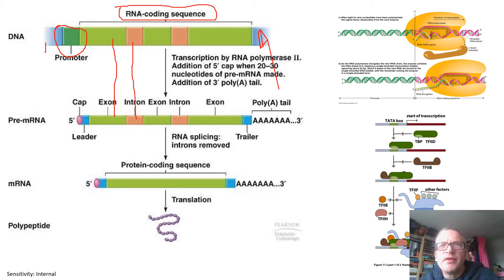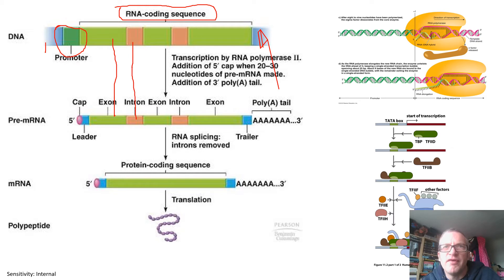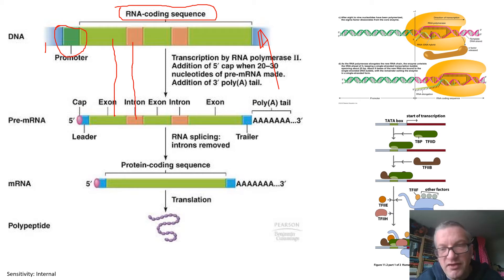In eukaryotes, there is the core promoter at minus 30 — the TATA box (T-A-T-A) at minus 30 — and some of the proximal promoters such as the CAAT box at minus 75 and the GC repeat box at minus 90. These promoters have a key role in enabling the transcription process to begin.